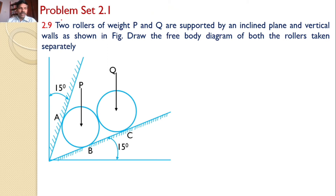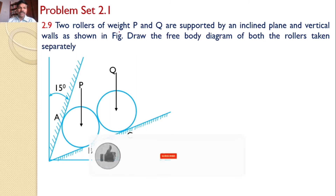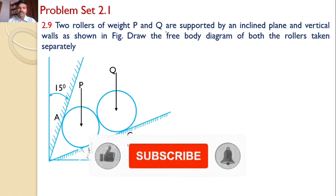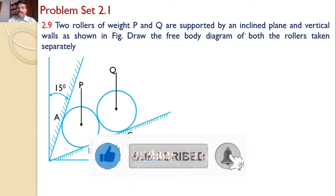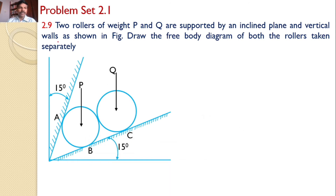In this video, we will solve problem set 2.1, problem number 2.9 — that is, two rollers of weight P and Q are supported by an inclined plane and vertical walls as shown in the figure. Draw the free body diagram of both the rollers taken separately.